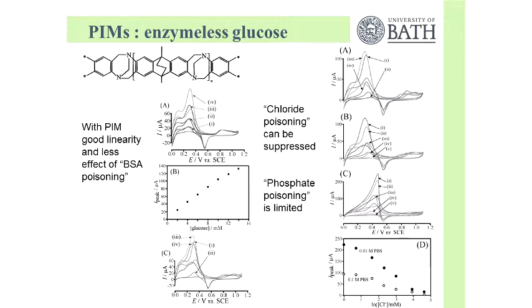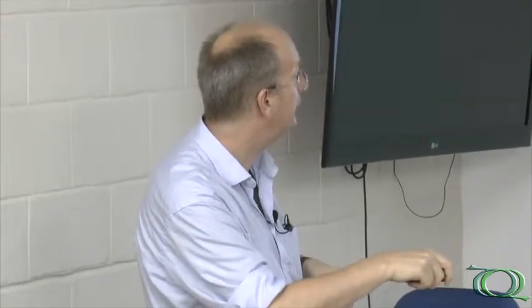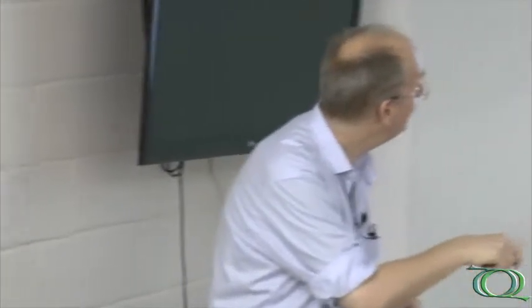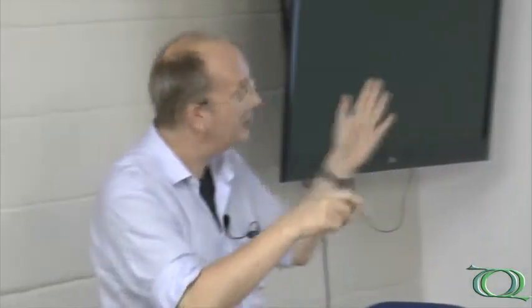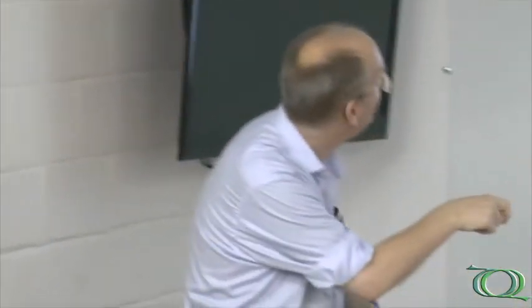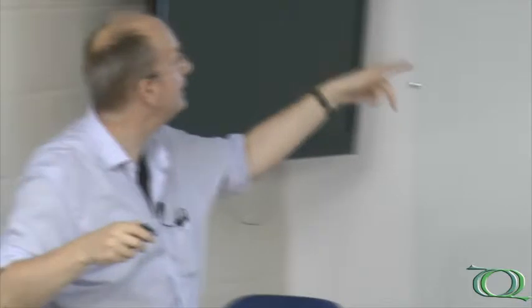Also, chloride poisoning: chloride binds to the gold surface and can change the chemistry — it can poison the surface. That can also be suppressed with the polymer, though not completely. We also discovered that phosphate poisons the catalyst too. So the access of phosphate to the catalyst changes the way it works. It's really a competition: the glucose, the chloride, the phosphate, and other proteins are all competing to access the active site on the surface. This kind of film allows us to control the access to the catalyst.